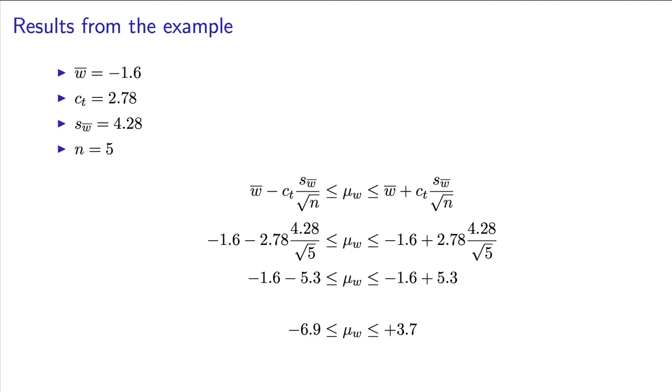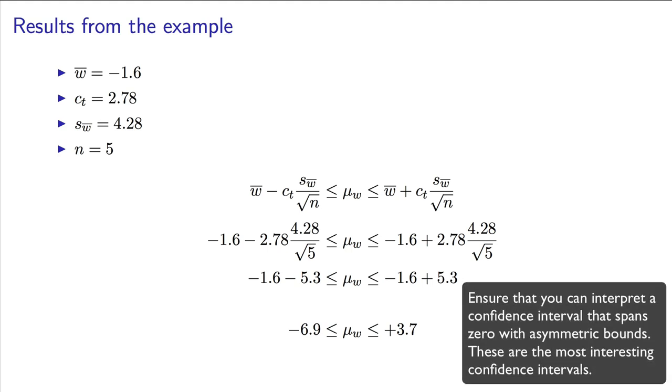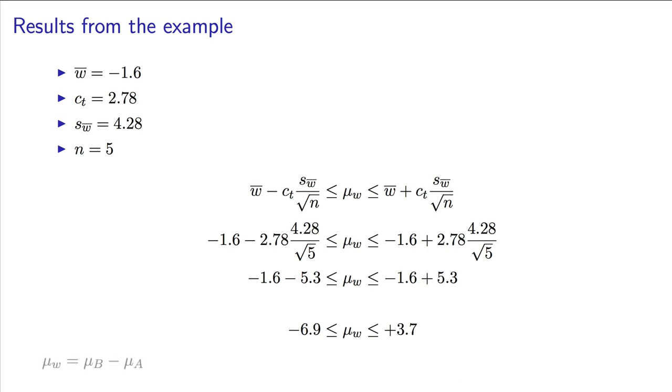Let's interpret those bounds. Firstly, because it spans 0, it indicates to us that there is no significant difference between baffles and no baffles. Does that imply then we should go install baffles? Well, let's see, the bounds are asymmetrical as well, and they skew in favor of the case of no baffles. Remember, I defined w as b minus a, with baffles minus no baffles. And w-bar was a negative number. That indicates that adding baffles leads to a slightly worse, lower conversion.